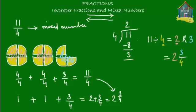The shortcut method: simply take the numerator, which is 11, and divide it by the denominator, which is 4. You get 2 with a remainder of 3. So 2 becomes the whole number part and 3 becomes the numerator of the fractional part. The improper fraction 11 upon 4 is equal to 2 and 3 upon 4. That means 11 pizza slices divided into groups of 4 give you 2 whole pizzas plus 3 fourths of a pizza.